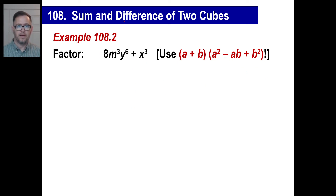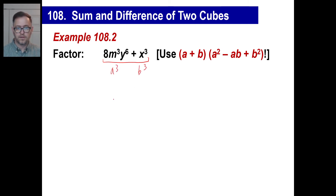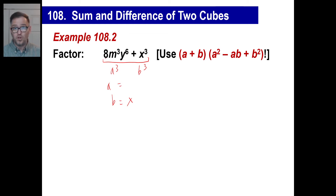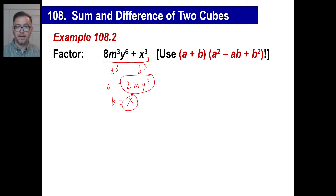Let's try another one. You need to visualize this expression — we're going to factor it. Look at this as a cubed, and this part as b cubed. The easier one: b is just going to be x. For a — what cubed gives you 8? The answer is 2. What cubed gives you m cubed? The answer is m. What cubed gives you y to the 6th? What times itself three times gives y to the 6th? The answer is y squared. So a is 2my².